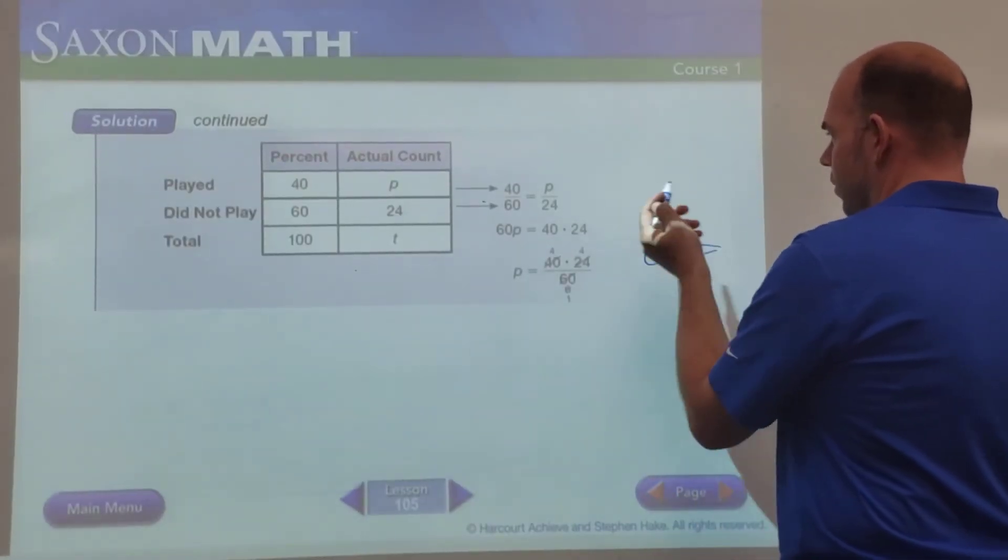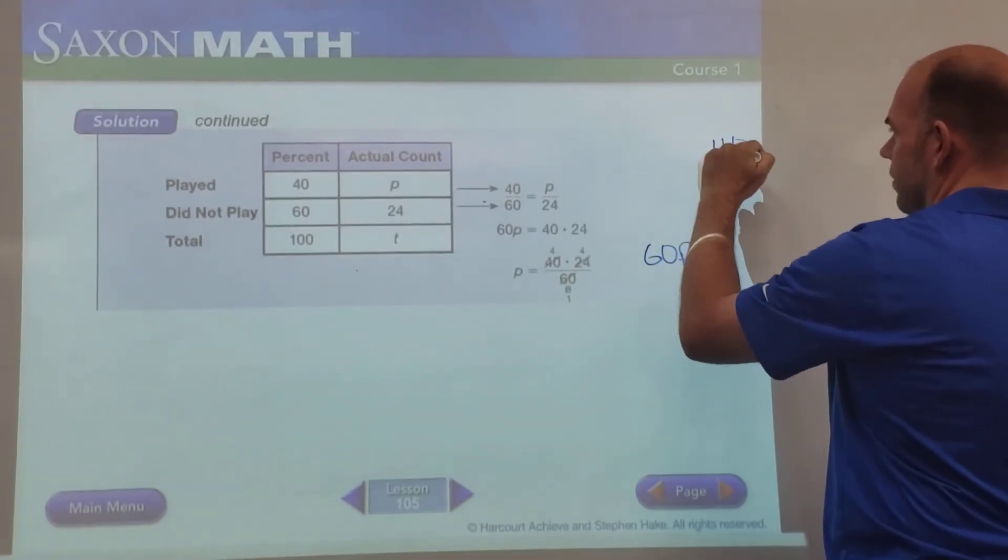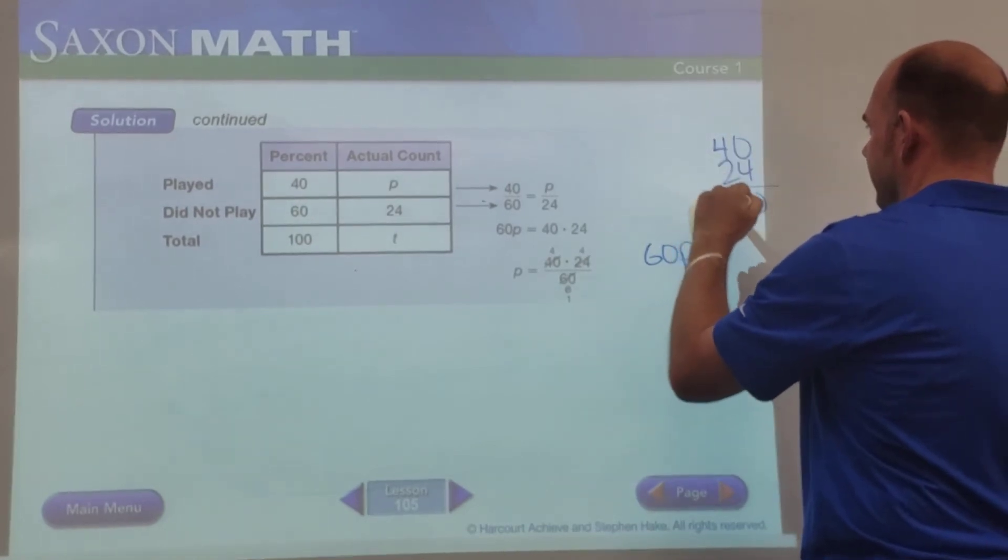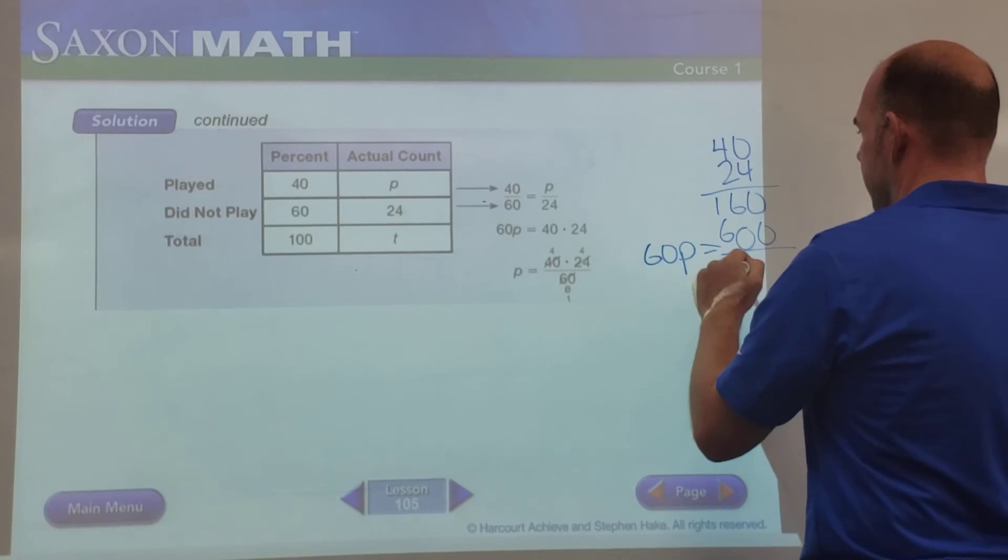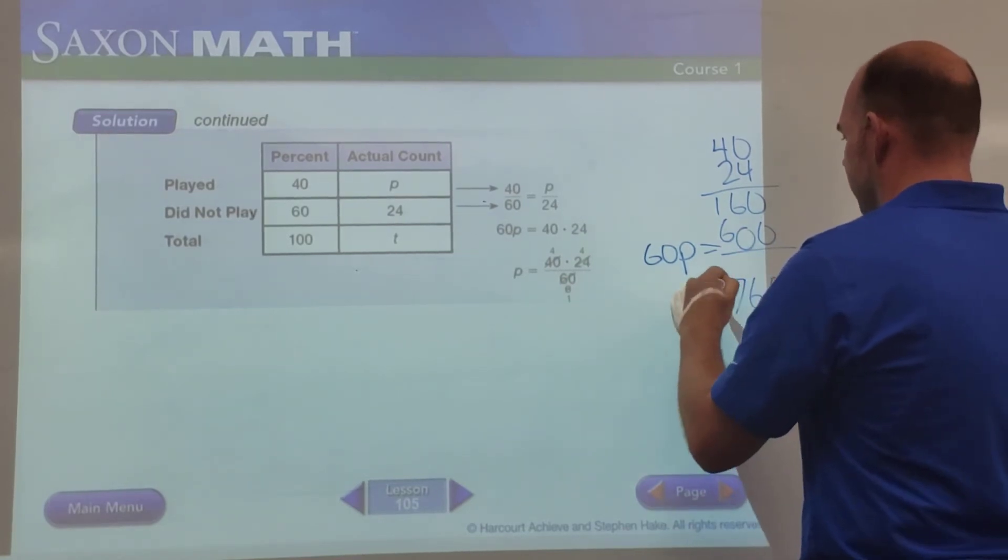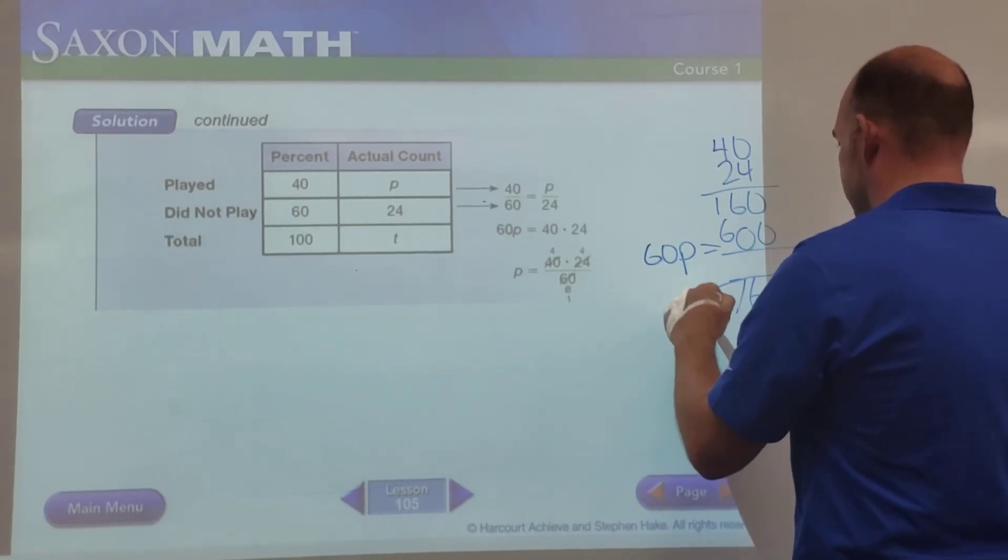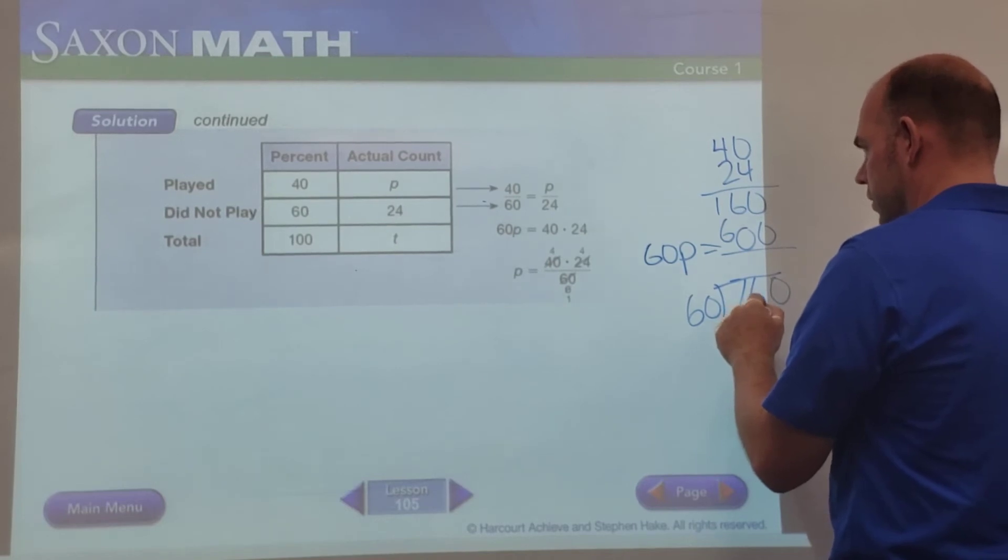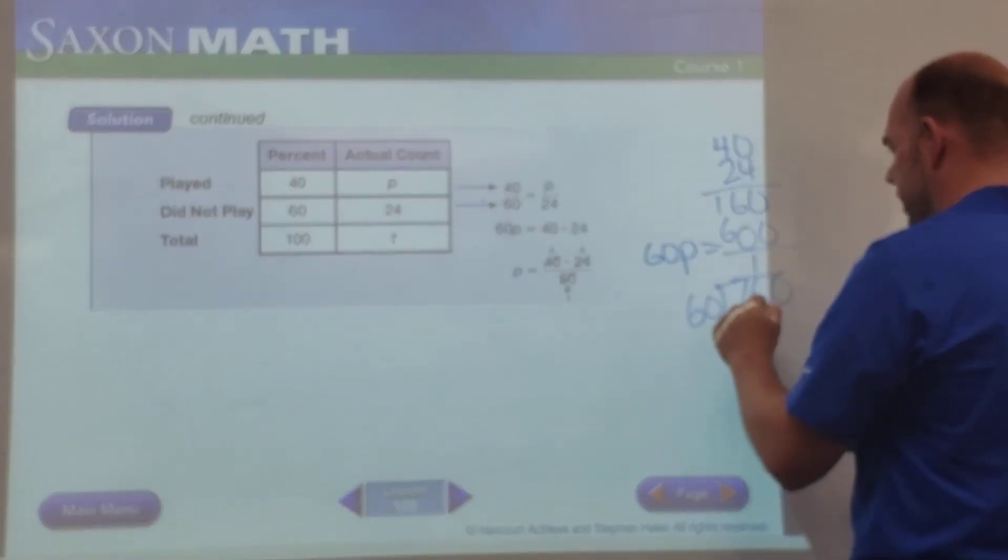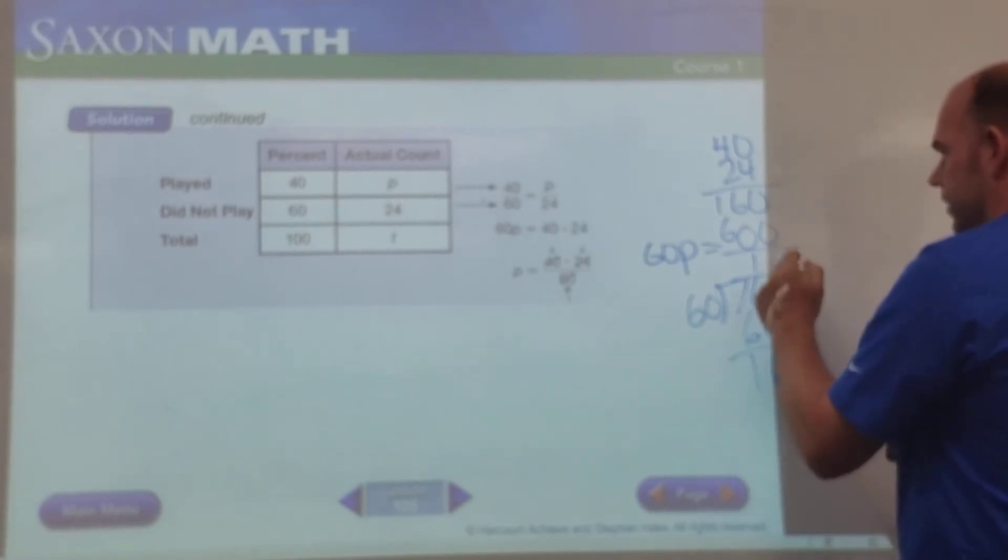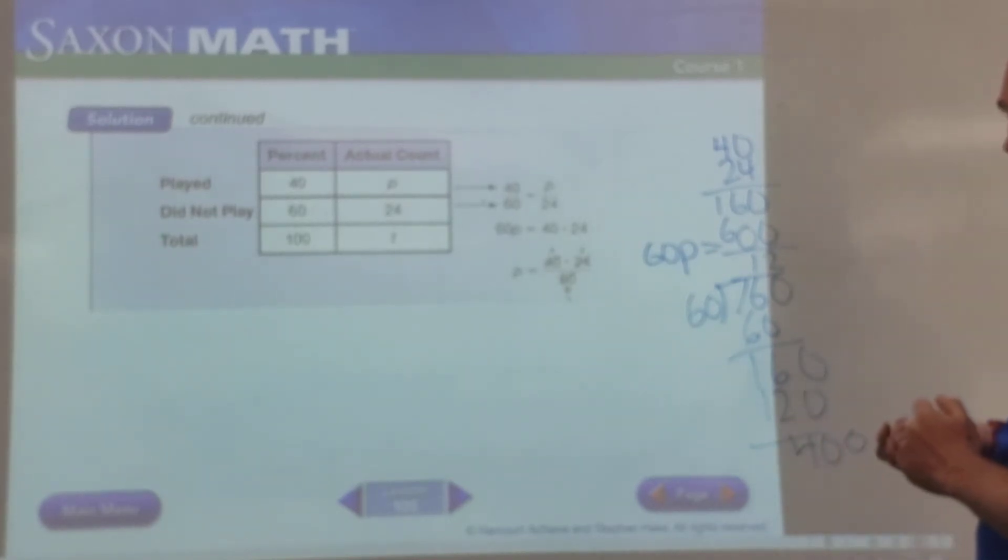I would just do again 60p equals 40 times 24, so we can just do 40 times 24. This is how we've learned to do our long multiplication. And that gives us 760. Now we'll divide that by 60. 60 goes into 76 one time, we're left with 16, or 160. That then goes twice, it's 120, lifts us with 40, or 400.